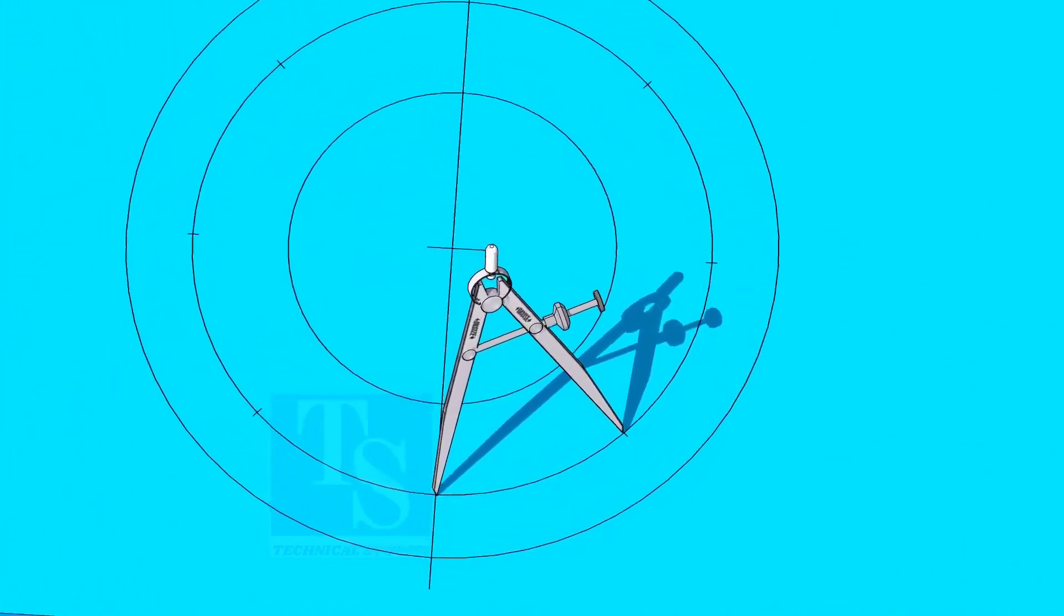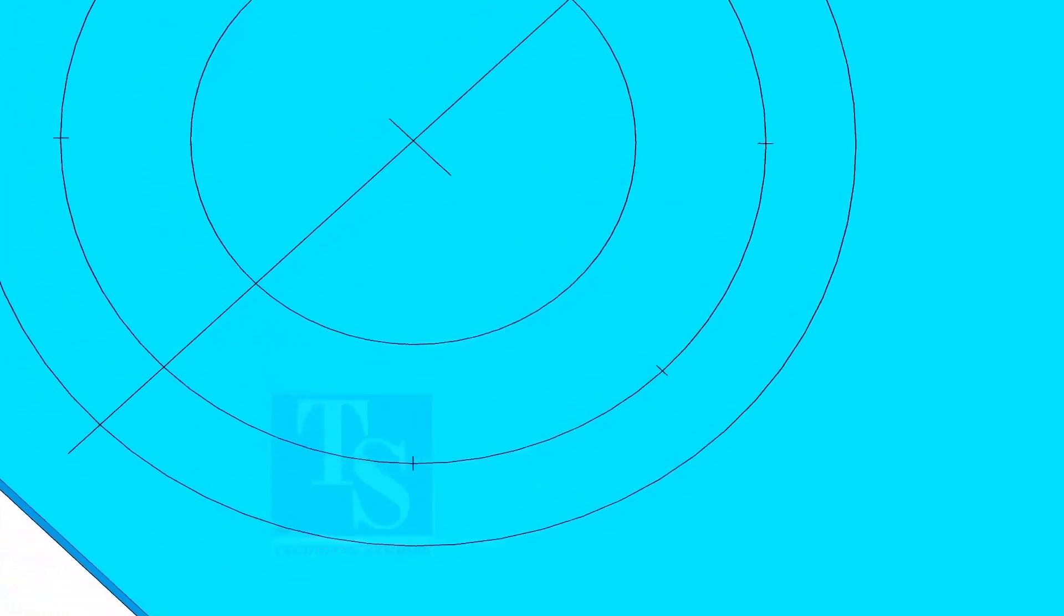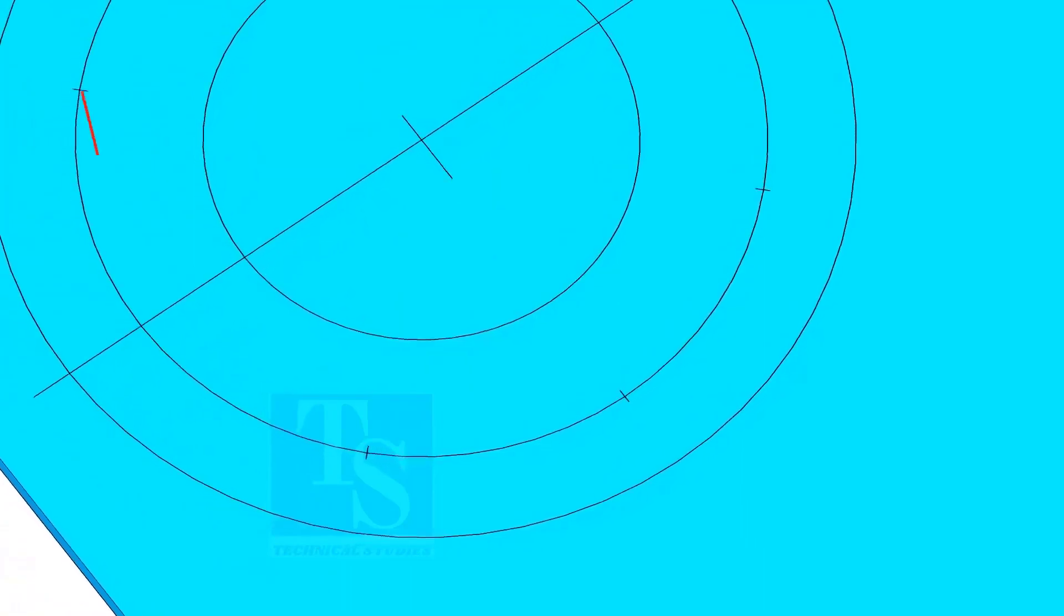Now divide the PCD into 8 parts. Dividing the circle is not an easy job. It requires good practice. Make sure the last segment is the same as the other segments.